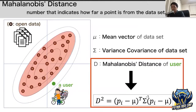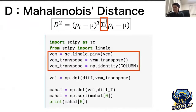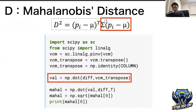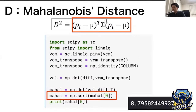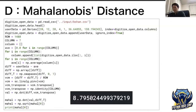Next, calculate the Mahalanobis distance. First, calculate the inverse matrix of the variance-covariance matrix. Then multiply that inverse matrix by the vector of user data minus the mean vector and assign this to variable var. Next, multiply that variable by the transpose of that vector. Finally, the Mahalanobis distance is calculated by taking the square root of this value. The Mahalanobis distance this time is 8.79.